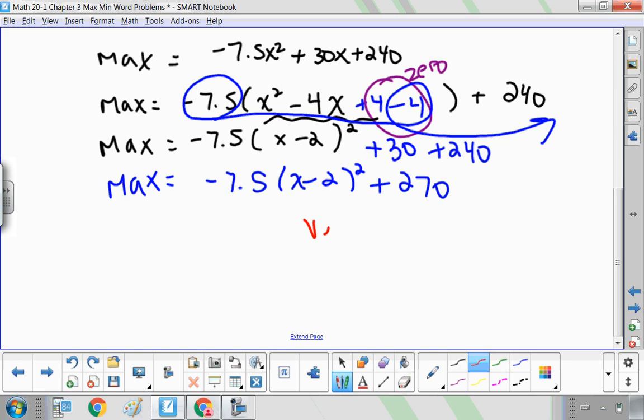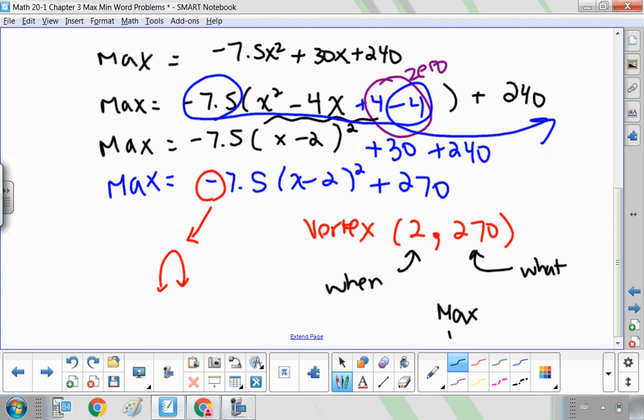So my vertex is going to be opposite on the inside, negative 2 becomes positive 2, straight up on my outside. Because it's negative, I know my parabola opens down, so I do in fact have a maximum. So this is what my max or min is. This is when my max or min occurs. So what my max is, is the maximum receipts or profits would be $270.